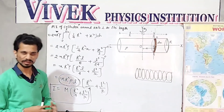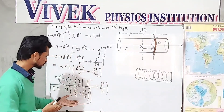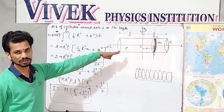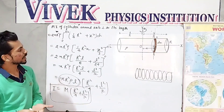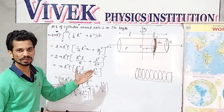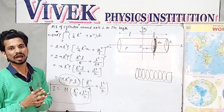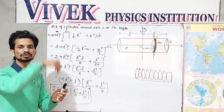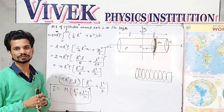In the next video we will look at the MI of the same cylinder around an axis which is along the length or height of the cylinder.